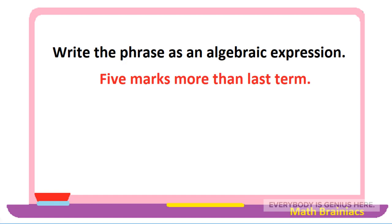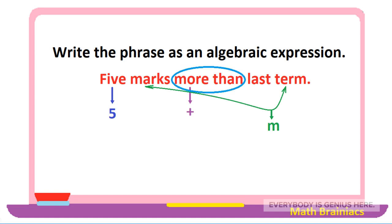Let us work on this example: write the phrase as an algebraic expression — 'five marks more than last term.' Let us write number five. 'More' means to add, so we write the plus sign. Let us assign letter m as the marks for last term. Since there is a comparison word 'more than,' the marks for last term must be placed before number five. So the phrase 'five marks more than last term' as an algebraic expression is m plus five.